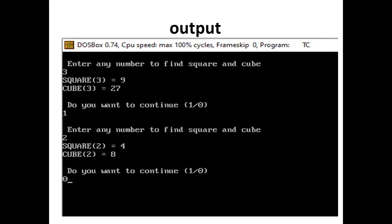Here is the output. The program prints "Enter any number to find square and cube." The user enters 3; square of 3 is 9 and cube of 3 is 27. Asked to continue, the user presses 1. Again entering a number, the user enters 2; square of 2 is 4 and cube of 2 is 8. The user then presses 0 to stop the process.